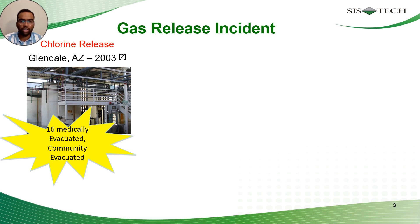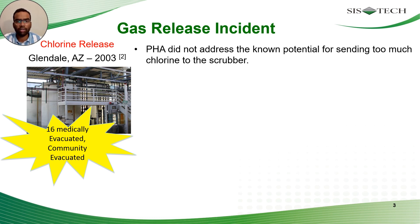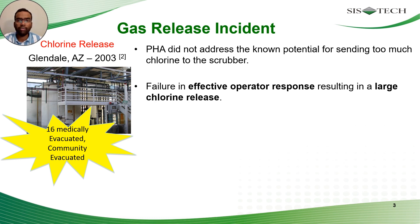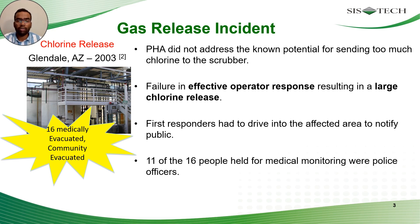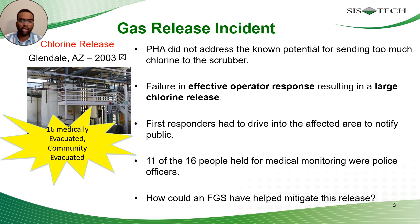Let's see what the CSB found out in this incident. First, the process hazard analysis did not address the known potential for sending too much chlorine to the scrubber. Second was the failure in effective operator response that resulted in the large chlorine release. Third, the first responders had to drive into the affected area to notify the public, and 11 of the 16 people held for medical monitoring were police officers. Could FGS have helped mitigate this release? Maybe — a gas detection system triggering an automated process shutdown and community emergency notification system might have helped reduce the severity of this incident.